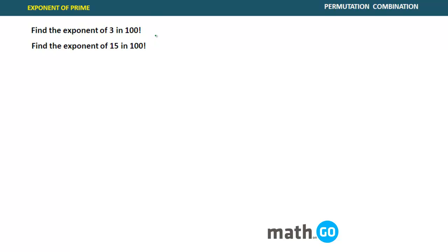Now let us solve a very interesting concept which is exponent of prime. Let's start with an example. It says find the exponent of 3 in 100 factorial. First of all, what do you mean by exponent? Exponent is nothing but power. Remember exponent of prime is the topic. So we can find only powers of prime number in a factorial.